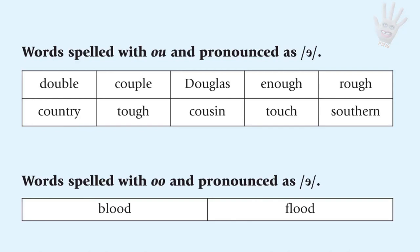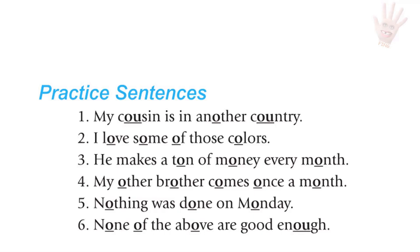Words spelled with double O pronounced as Uh: blood, flood. Sentences for practice: My cousin is in another country. I love some of those colors. He makes a ton of money every month. My other brother comes once a month. Nothing was done on Monday. None of the above are good enough.